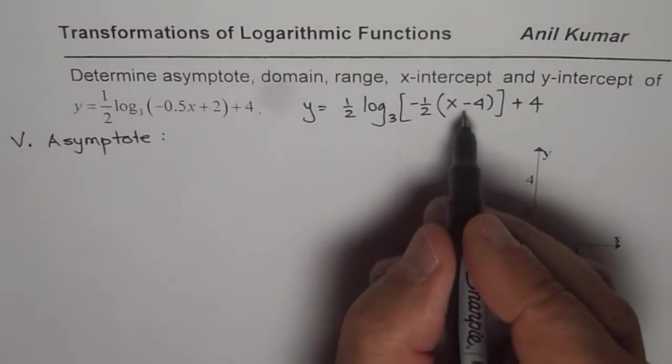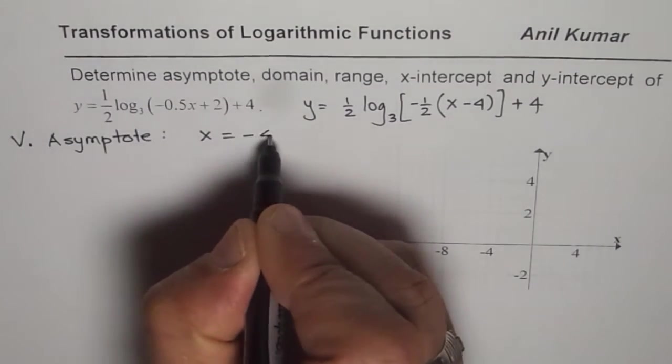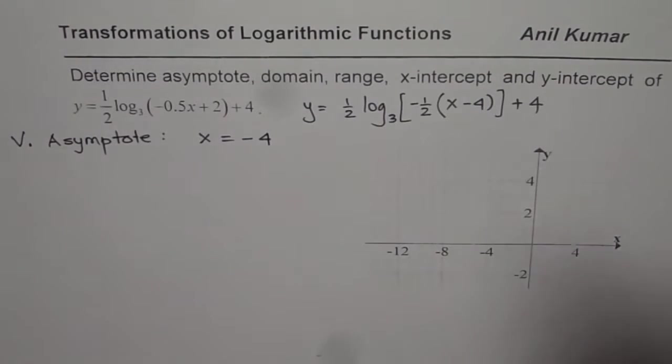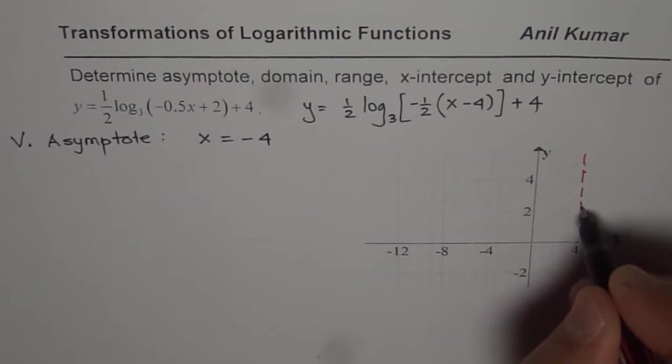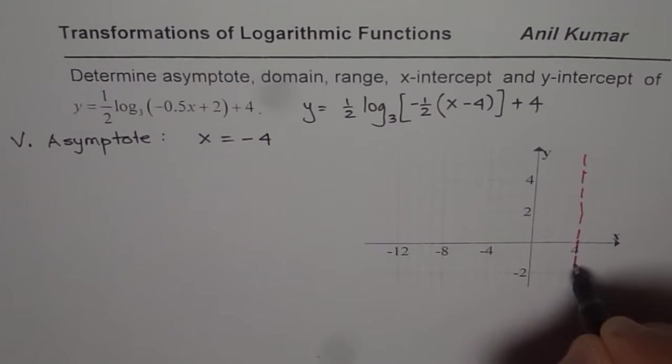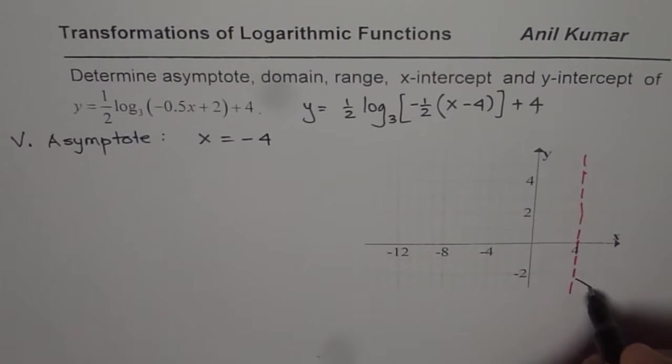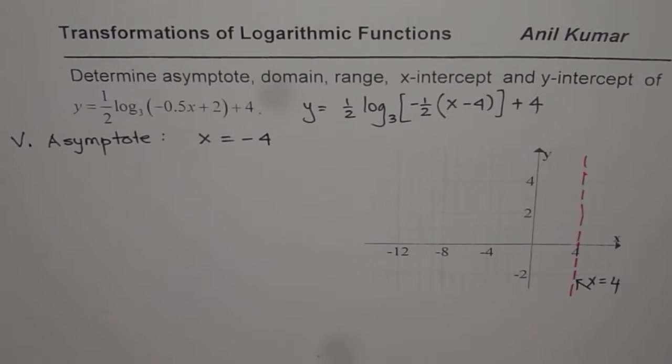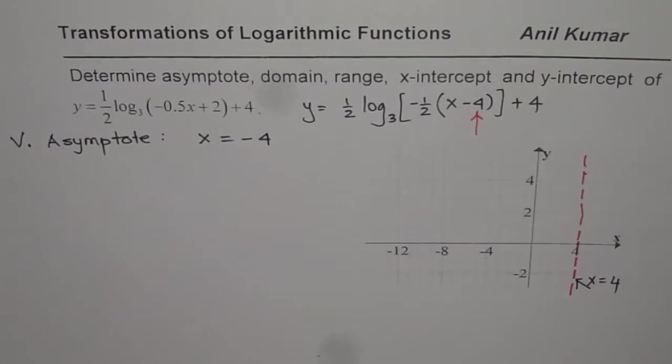On a graph, you will see it right there. So this is minus 4. We are making a rough graph here. In the next video, we'll actually plot the graph. So that is your vertical asymptote, which is x equals minus 4. And the reason for it is the horizontal translation of 4 units.